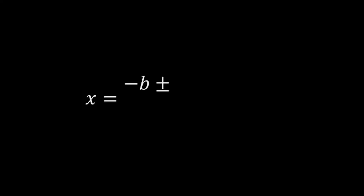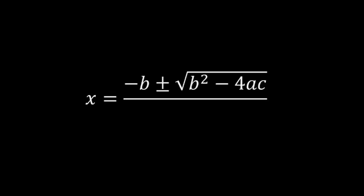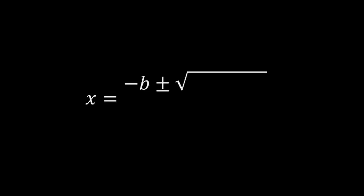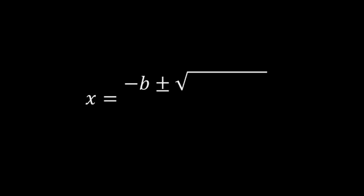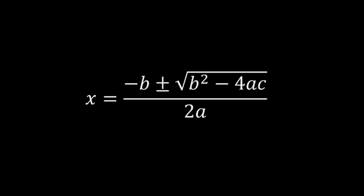x is equal to negative b plus or minus the square root of b squared minus 4ac, all over 2a.